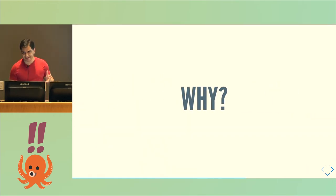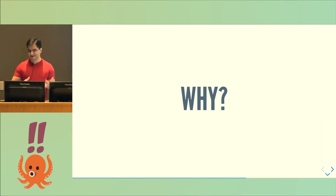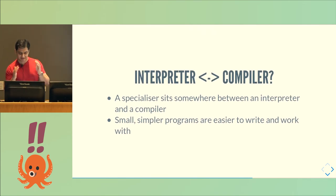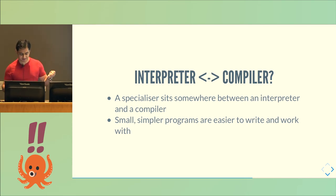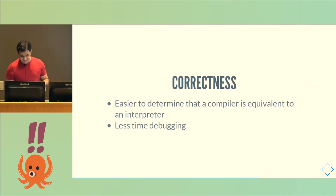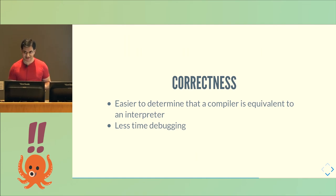Why would someone want to do this? In the 80s, when Futamura came up with these ideas, people tried to write general-purpose specializers, but they turned out to be very difficult to write, and the speedups weren't as impressive as hoped. Still, specialization gives an interesting insight into the difference between an interpreter and a compiler — a specializer sits somewhere in between. The fact that you can use a specializer to turn an interpreter into a compiler means instead of writing a compiler, which is hard, error-prone, and tedious, you can just write an interpreter and a specializer, jam them together, and get a compiler for free. This is also important for correctness, since compiler bugs are pretty frustrating.